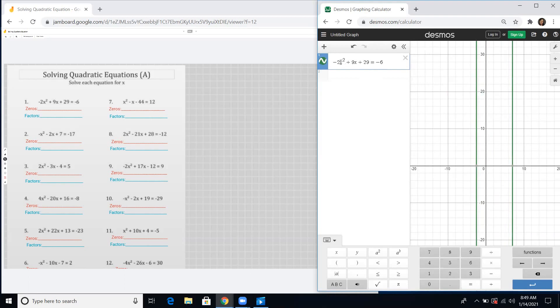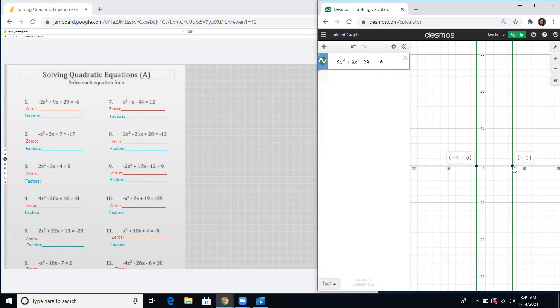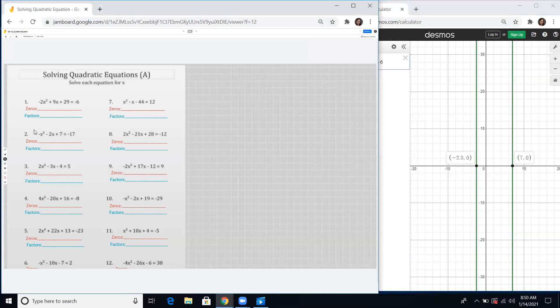There you go, the graph is what we call a parabola. It is a sad face because the numerical coefficient of your quadratic term is negative. But take note, we will just look for the x-values. These are the zeros, the points that are touched by your parabola on the x-axis. We have negative 2.5 and 7.